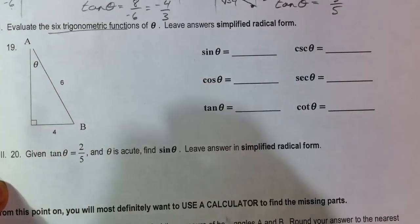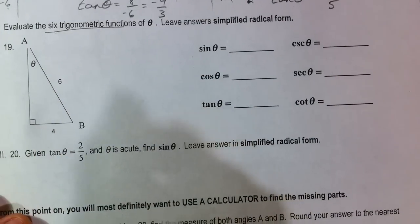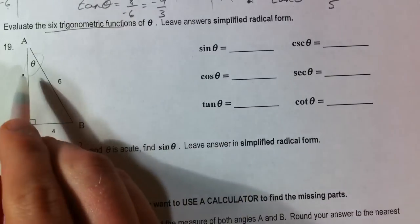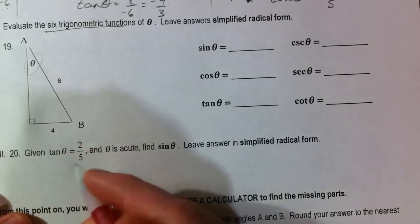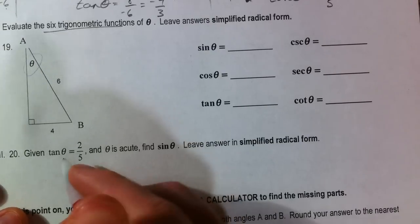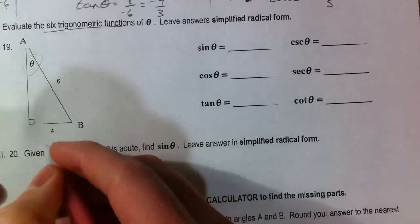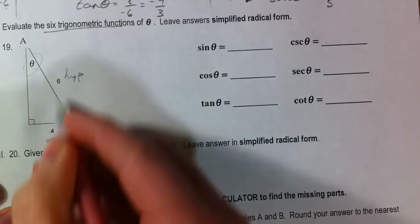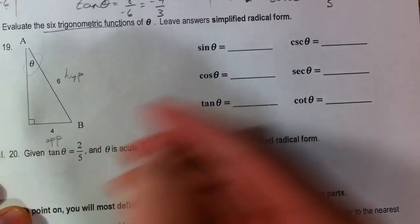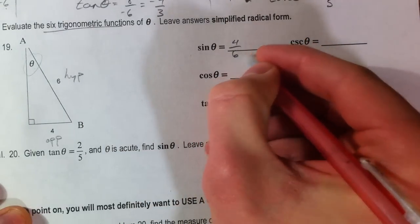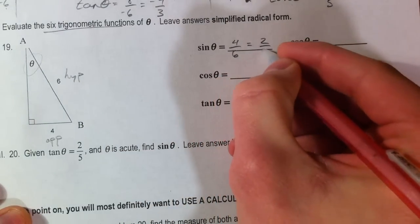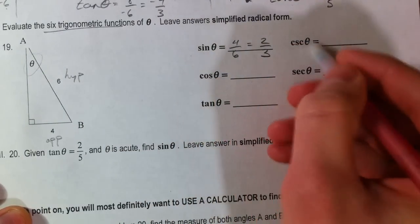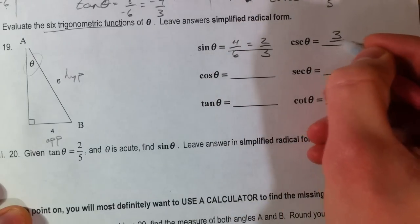Evaluate the six trig functions of θ. So we've been given a triangle. They've given us theta. It's a right triangle. And so we can find, based on theta, we have the opposite and the hypotenuse. So 4 over 6 is our sine. 4 over 6 or 2 thirds. And so the reciprocal cosecant of that is 3 halves.